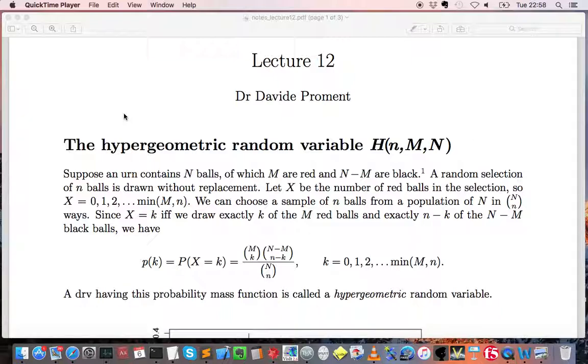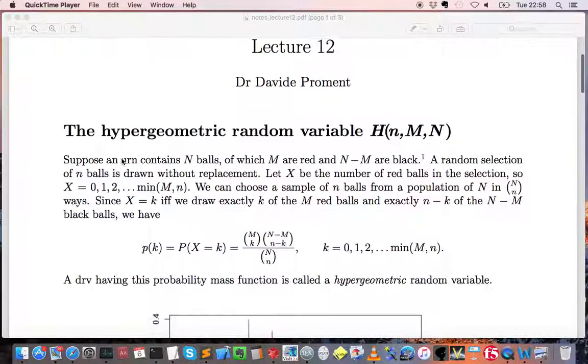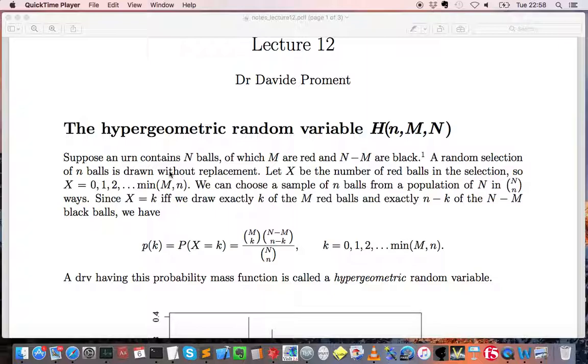We introduced the hypergeometric random variable by the following example. A bag contains N balls of which M are red and N-M are black. If we extract n balls at random, the hypergeometric random variable X counts the number of red balls extracted.